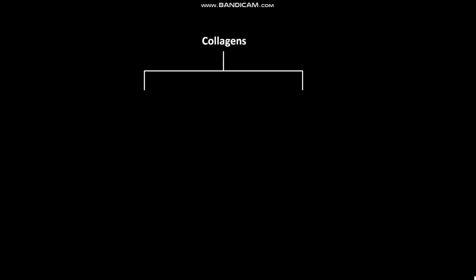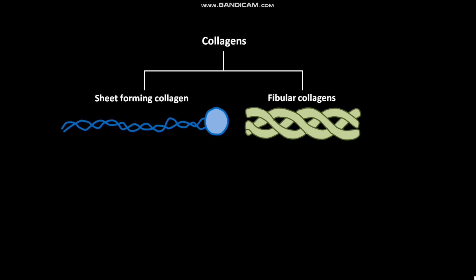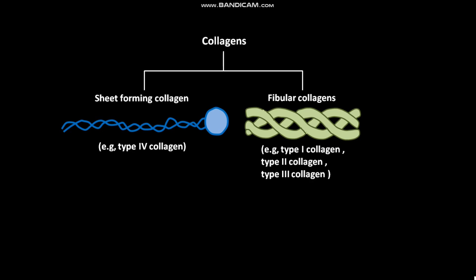Collagens are of two types. One is sheet-forming collagen and another is fibrillar collagen. Sheet-forming collagen includes type IV collagen. Fibrillar collagens include type I collagen, type II collagen, and type III collagen. Collagens often form fibres.